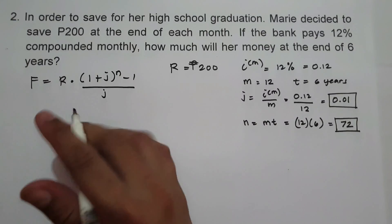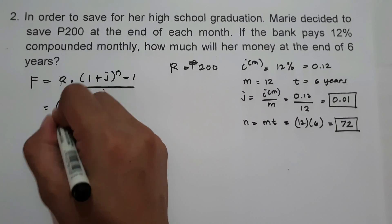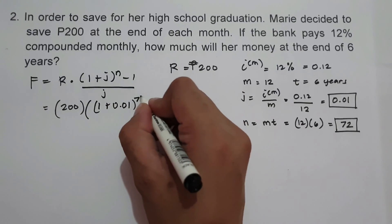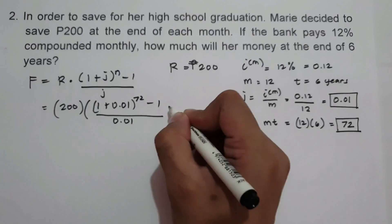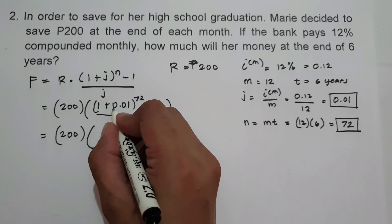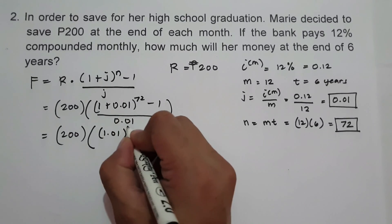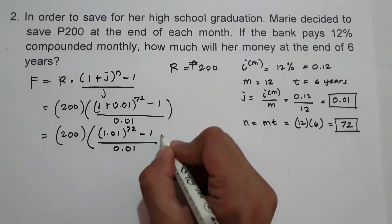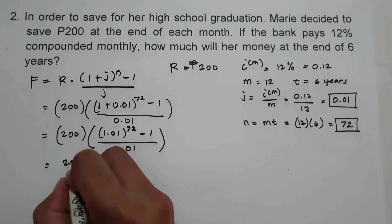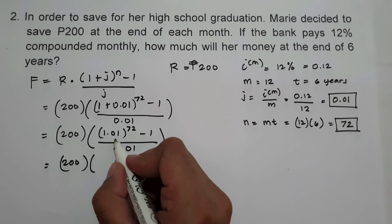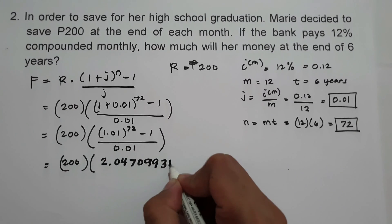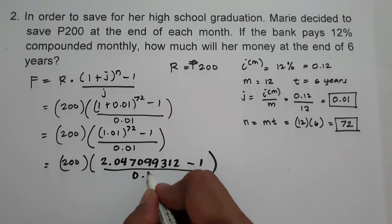Substituting into the formula: 200 multiplied by the quantity of 1 plus j (0.01) raised to n (72), minus 1, all over 0.01. Adding inside: 1 plus 0.01 equals 1.01, raised to 72, minus 1, all over 0.01. Raising 1.01 to the power of 72 gives 2.047099312. So we have 200 multiplied by 2.047099312 minus 1, all over 0.01.